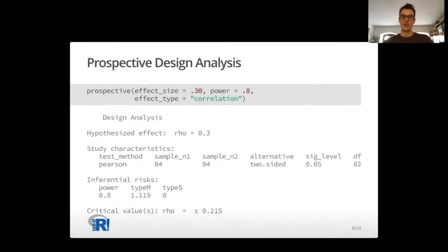In this case, for a correlation of 0.3, we need 84 participants to obtain a power of 80%, which is associated with a really low type M error and approximately zero type S error.